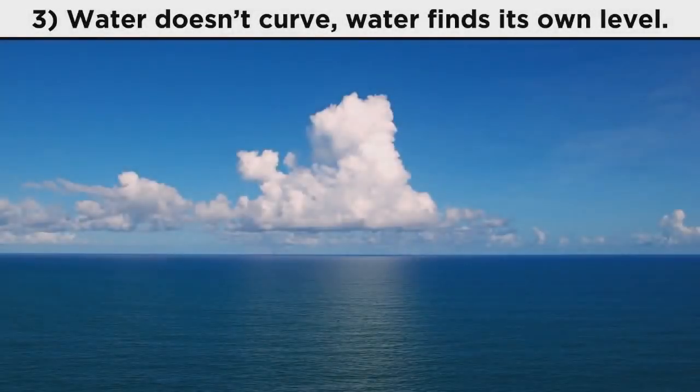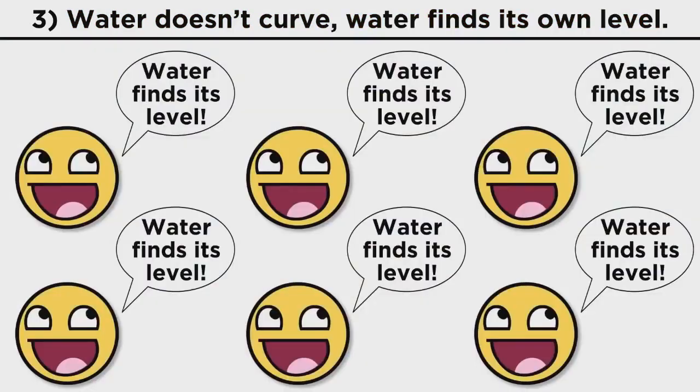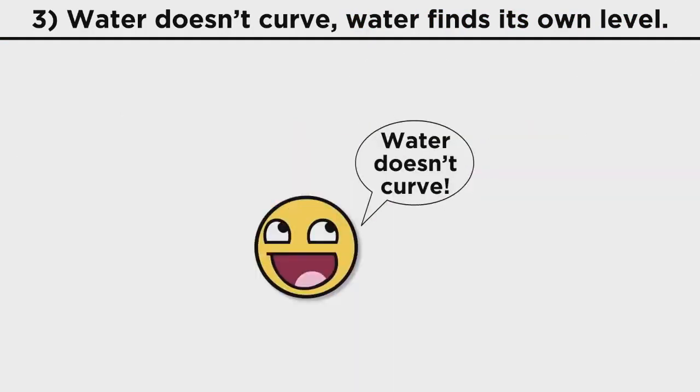Number three, all flat earthers say the same two things about water. The first is, water doesn't curve, and the second is, water finds its own level. The second phrase is completely meaningless, so the fact that you all say that exact thing verbatim is just one of the many demonstrations that you all blindly repeat what you hear without giving it a moment's thought. As for the first phrase, stating that water doesn't curve is at least a coherent thought. However, it is dead wrong.